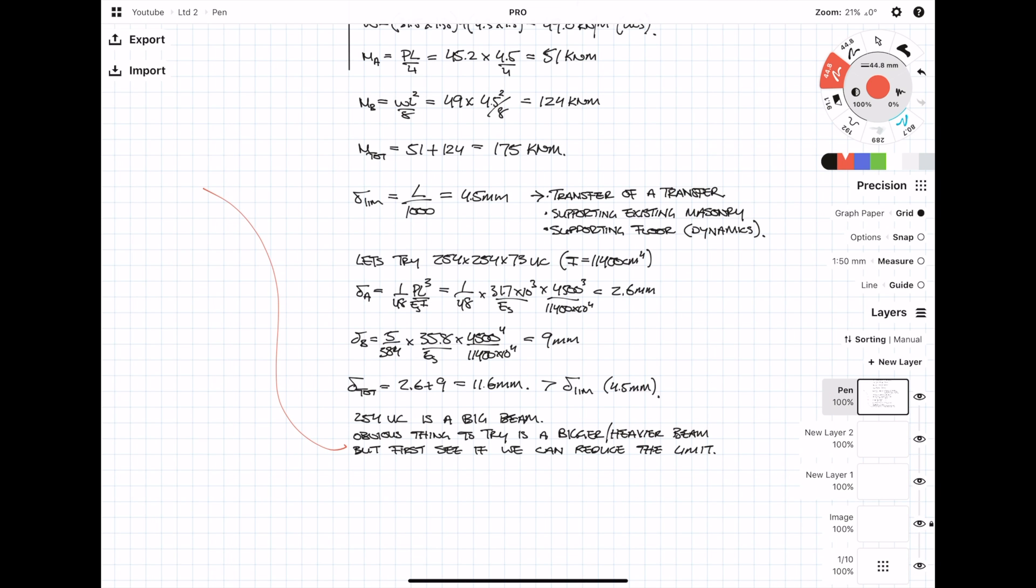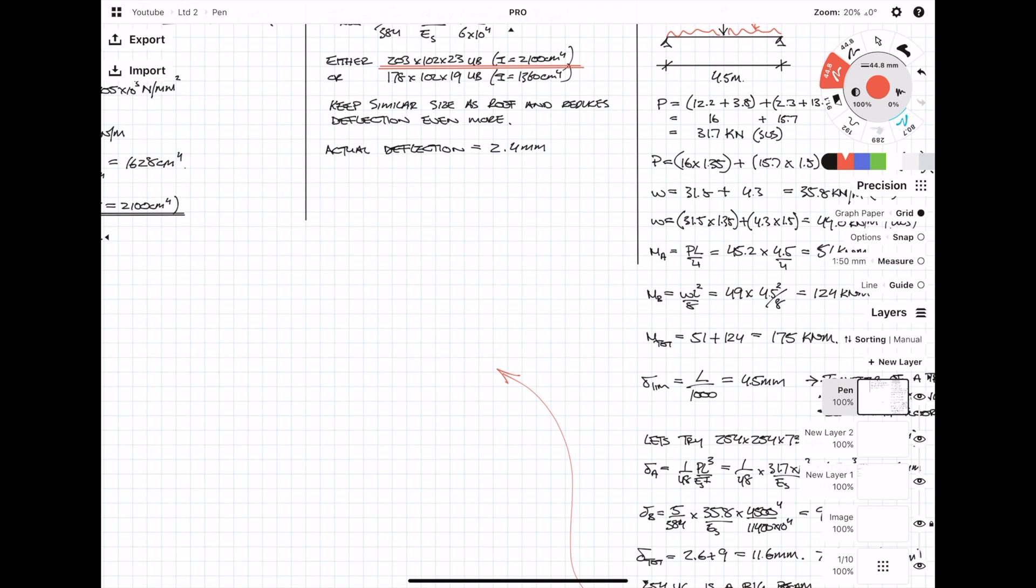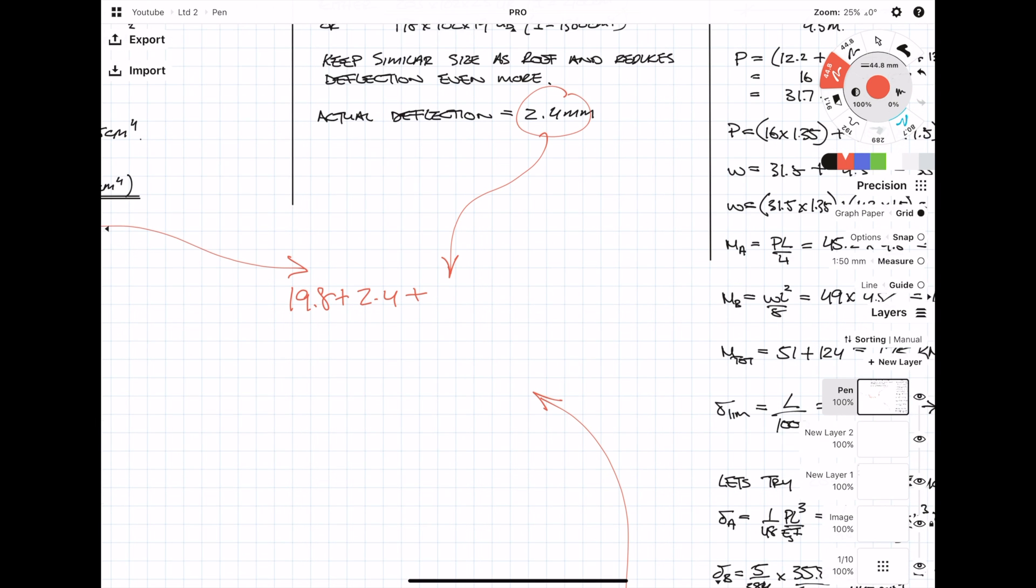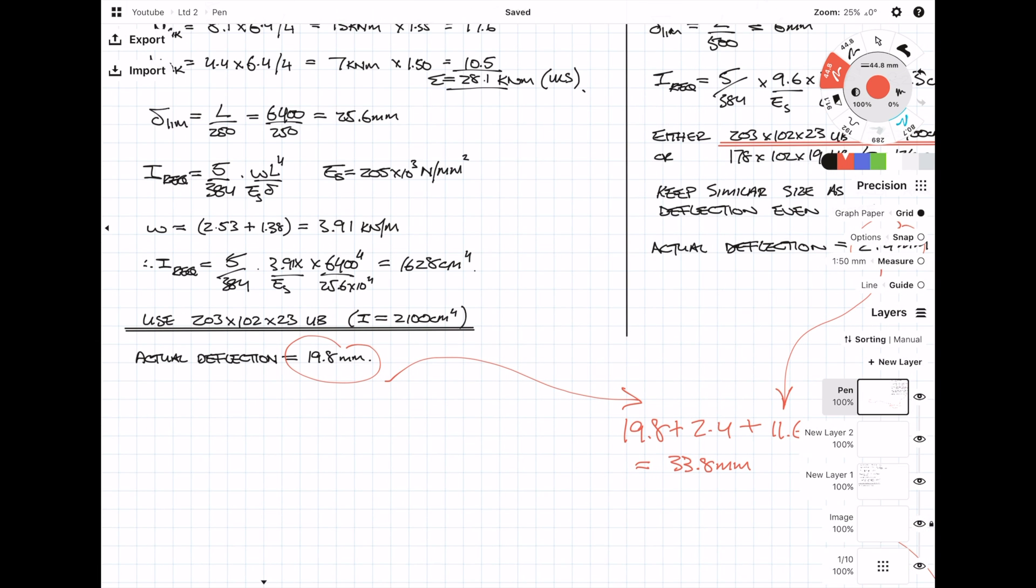I want to first check what the compounding deflection values are. I'm going to be looking at the deflection values of all three beams and then adding them up together. When you add all deflections together, you get a total deflection of 33.8 mm. Now this deflection is quite a lot and it actually exceeds the roof beam deflection limit of 25.6 mm.